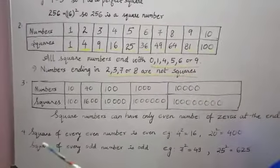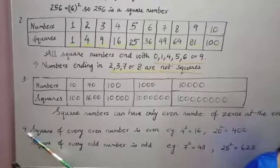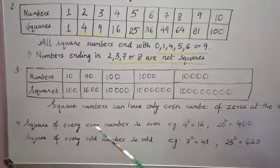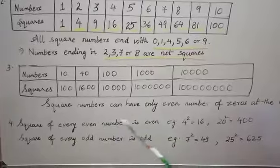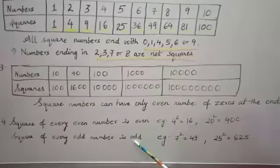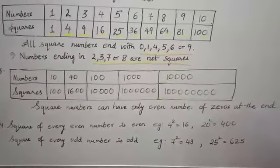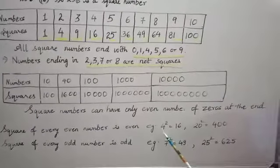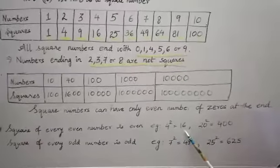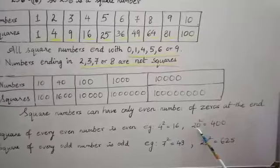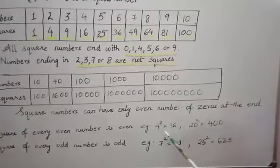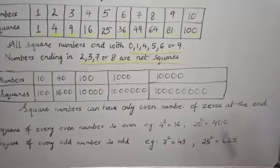Now, coming to the next property: the square of every even number is even and the square of every odd number is odd. You can see here examples like 4 is an even number, 4 square is 16, 20 is an even number, 20 square is 400. So, they are even, the squares and the numbers.